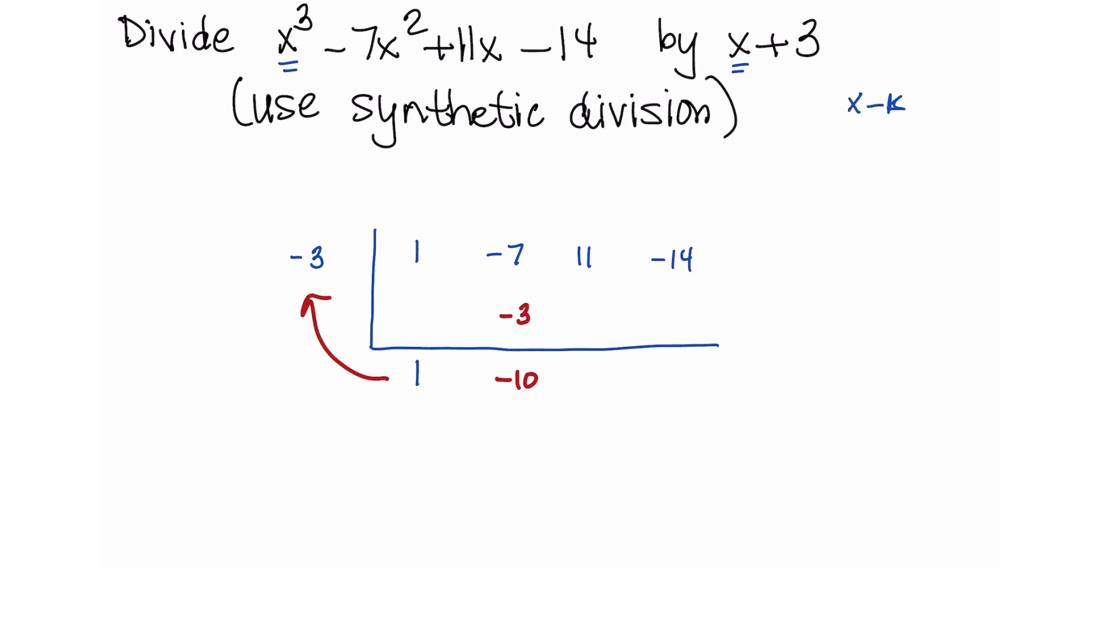And then it's the same basic thing. Again, we take negative 10 times negative 3, which is positive 30. And that gives us 41.